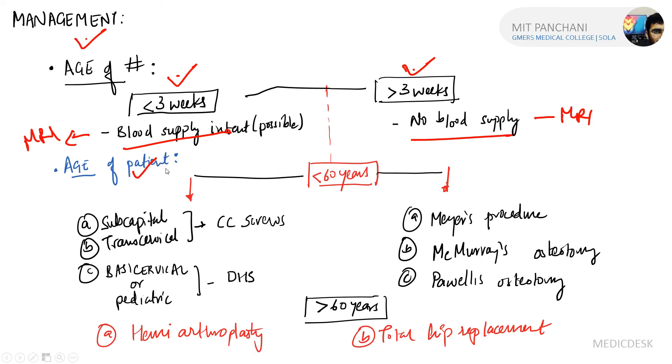Looking at the age of the patient: if less than 60 years and less than three weeks where blood supply is intact, further see the anatomical classification. If subcapital or transcervical, use CC screws (corticocancellous screws). If basicervical or in pediatric age group, use DHS (dynamic hip screw).